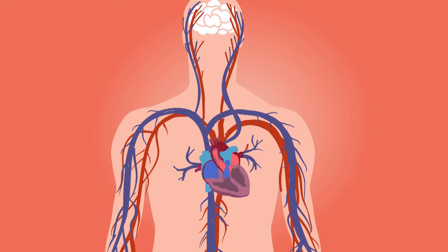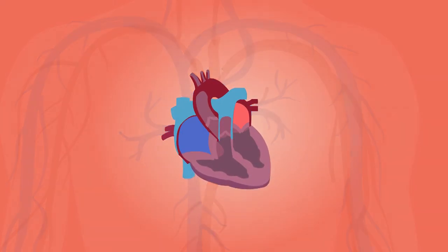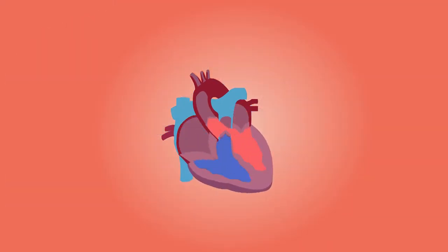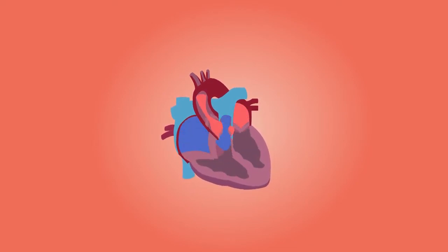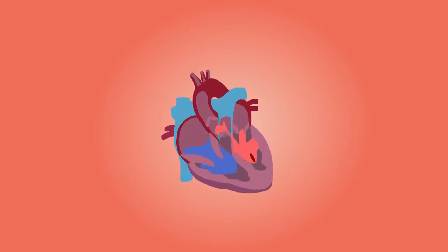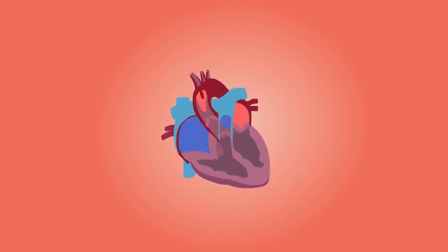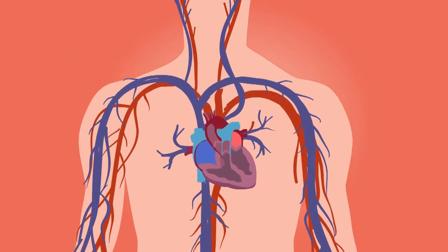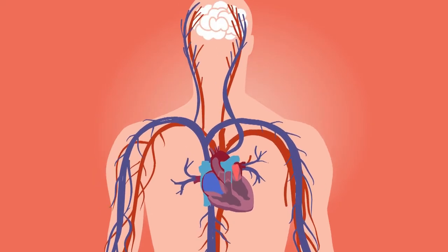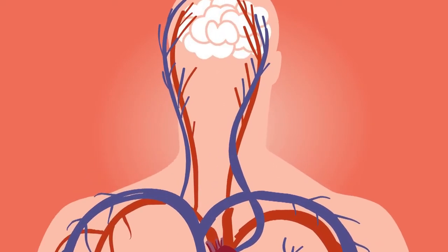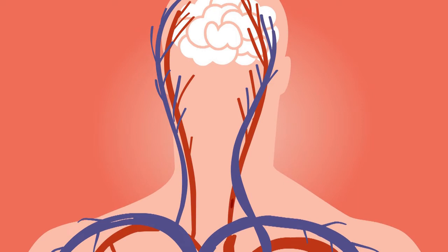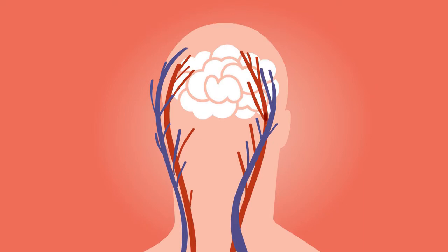Today we are going to see the difference between ischemic and hemorrhagic stroke. Normally the heart should beat in normal conditions. When the heart is beating, sometimes a cholesterol or fat plaque can come into the heart, then the left ventricle will pump it. You can see in this carotid artery there is a red spot that is like a fat or cholesterol plaque.